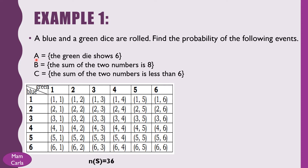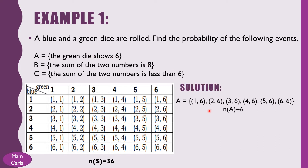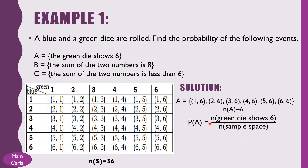To solve for the probability of Event A, where the green dice shows 6, event A consists of the outcomes: (1,6), (2,6), (3,6), (4,6), (5,6), (6,6). The cardinality of event A is 6. So the probability of event A equals the cardinality of event A divided by the cardinality of the sample space: 6 over 36, or simply 1/6.